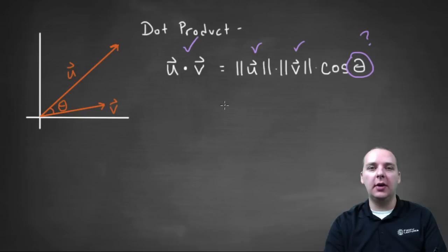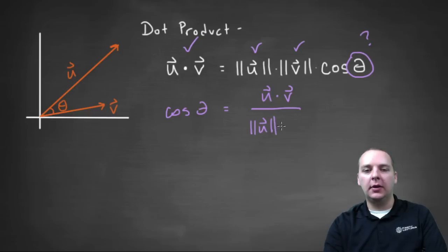In fact let's do that right now. If you're going to try to solve for theta, first thing you'd probably do is divide by the magnitude of u and the magnitude of v. So you'd have the cosine of theta would equal u dot v divided by the magnitude of u times the magnitude of v.